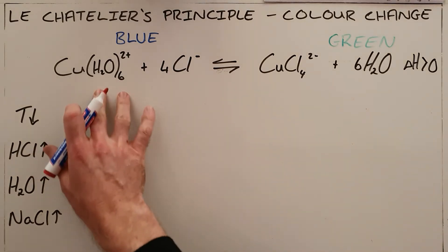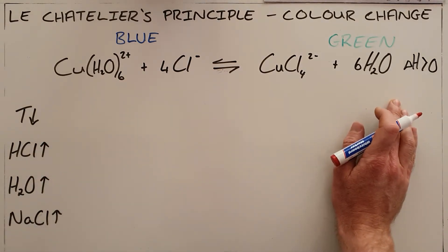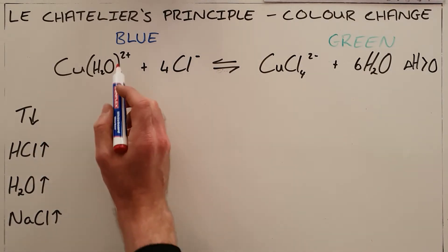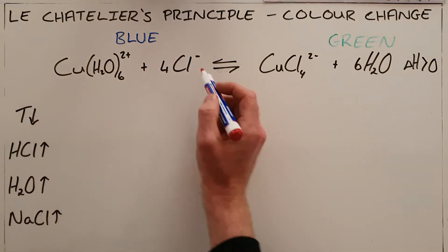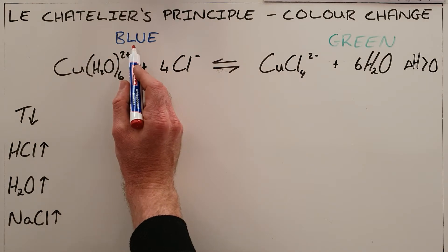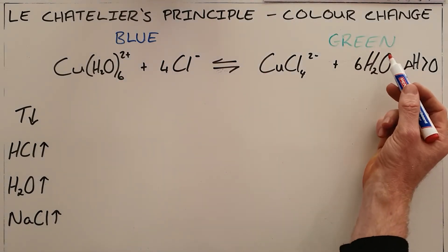Essentially what you are given is a fairly complicated equation, but to simplify it you are told that the reagents, or in this case the reactants on this side have a bluish color.